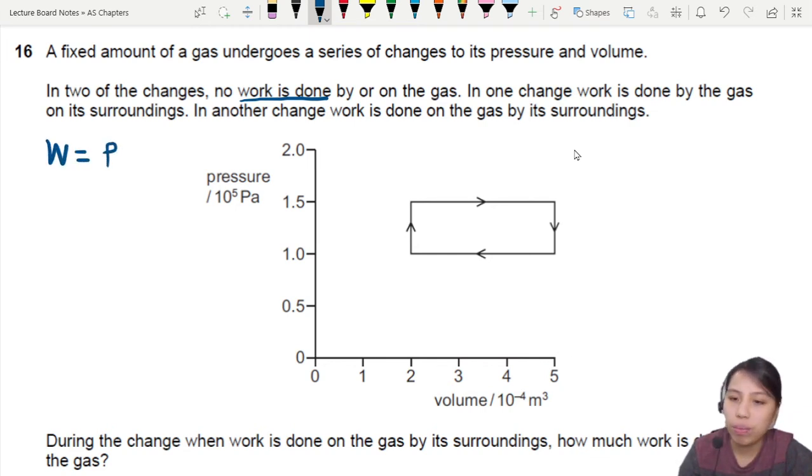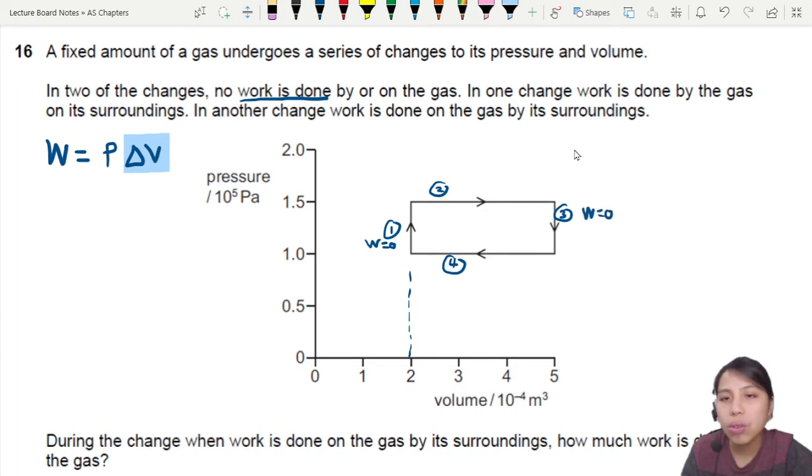Pressure of the gas. We just put pressure times change in volume. If there is a change in volume, then there will be work done. So you see, we shall not have change in volume. Yeah, you see this one from point one, let's call this transition one, there is no work done. And then it's transition two, transition three, and transition four. Transition three also no work done on gas or by gas.